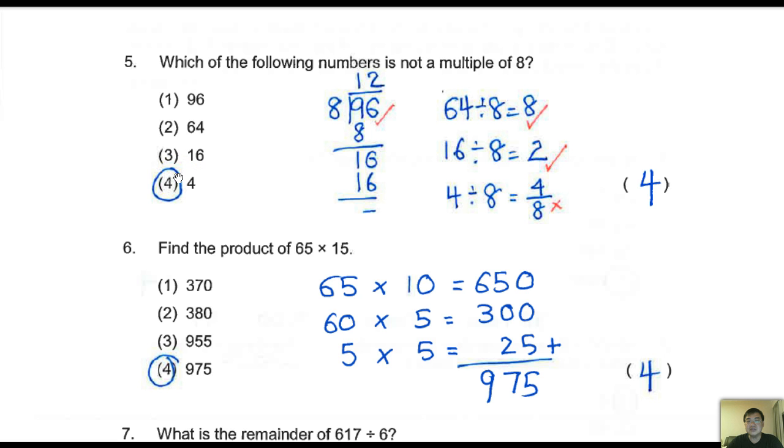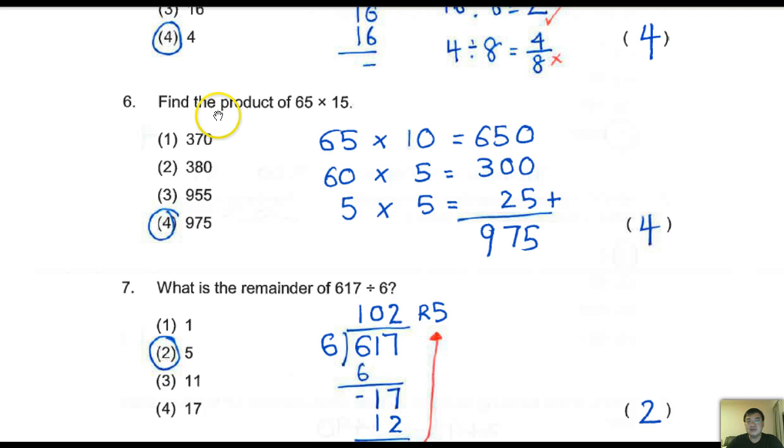Number 4 is not a multiple. All right, find the product of 65 times 15. You really have to do the method. My method here is just to show you how I can do it simply.